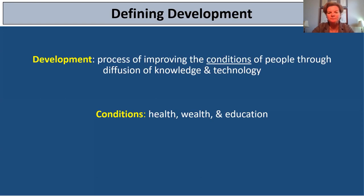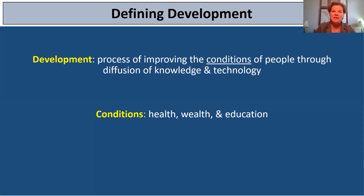Moving on to the second dimension, wealth — we can think of things like income level of individual citizens, but also the GDP, the gross domestic product of the entire country, and how much money the country is making in a given year. We can also think about trading capacity. For the third dimension, education — we think about how many years of formal education is standard in any given country, and also things like literacy rate. Those are the three conditions we typically look at when talking about levels of development.